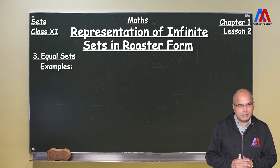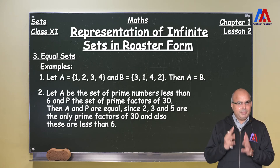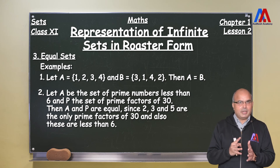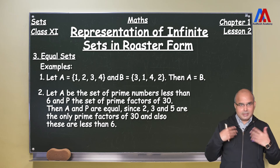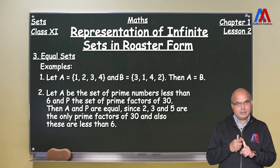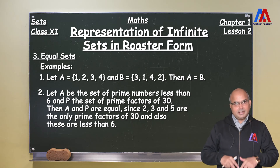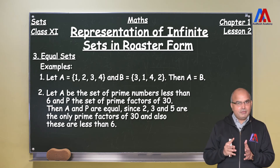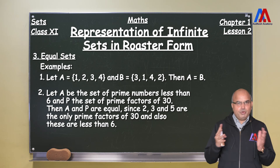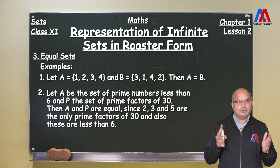Let's take some examples of equal sets. If set A = {1, 2, 3, 4} and set B = {3, 1, 4, 2}, then A = B because both have exactly the same members. Another example: A is the set of prime numbers less than 6, so the members are 2, 3, and 5. Let P be the set of prime factors of 30 — again 2, 3, and 5. Both sets have identical members and therefore both sets are equal to each other.